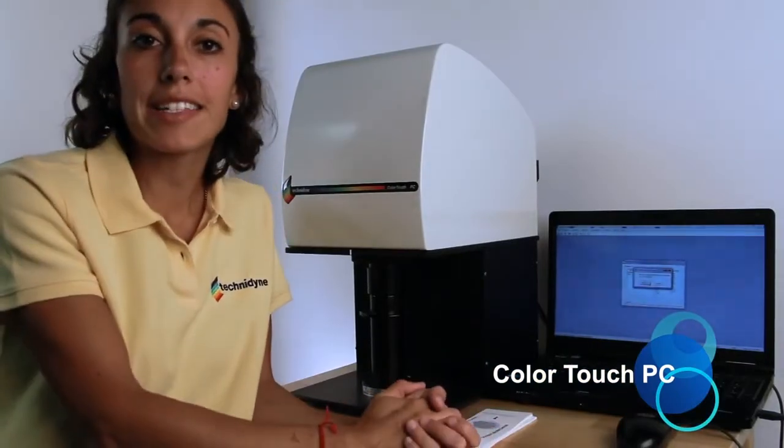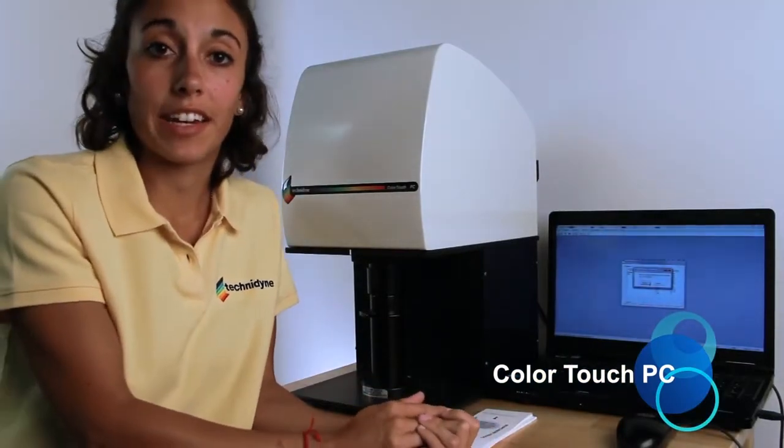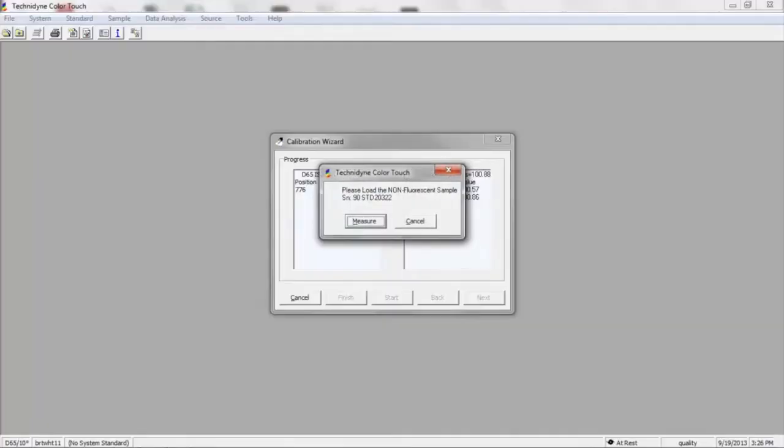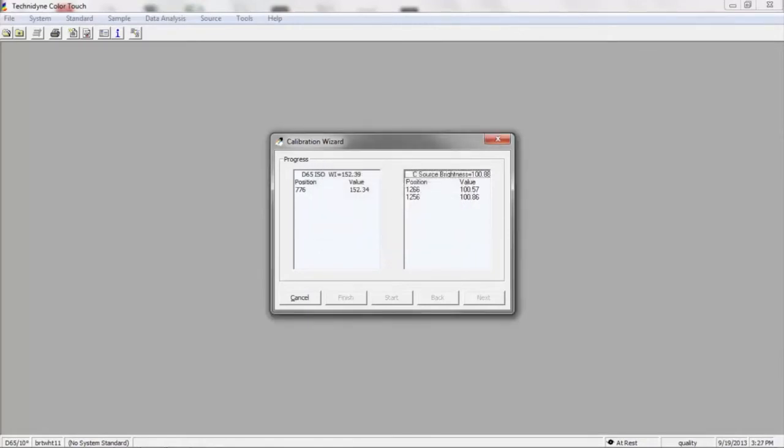Finally, our last step is to reload our 90 standard and press measure. This is the last verification of calibration at each filter position, and it's also the final calibration of the internal swing-in standard at each filter position.